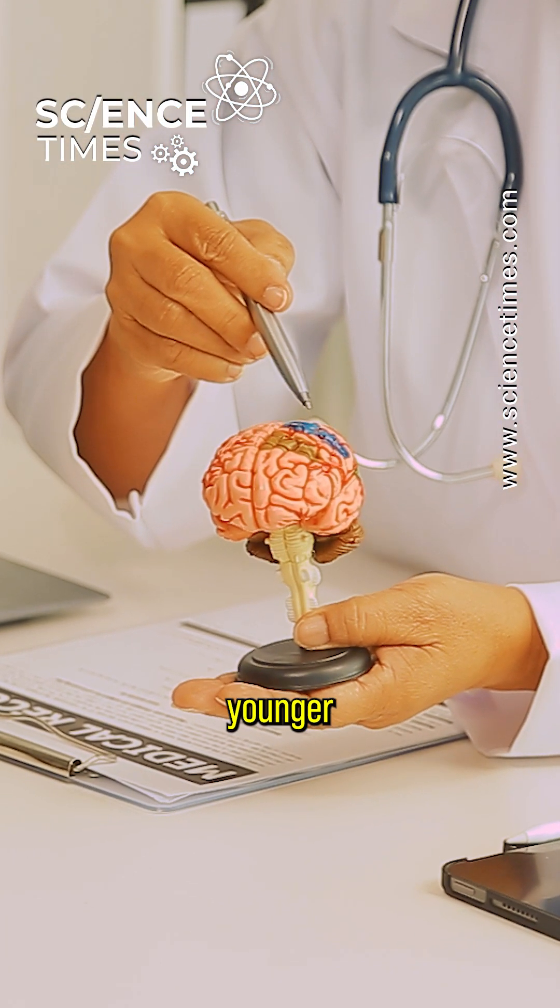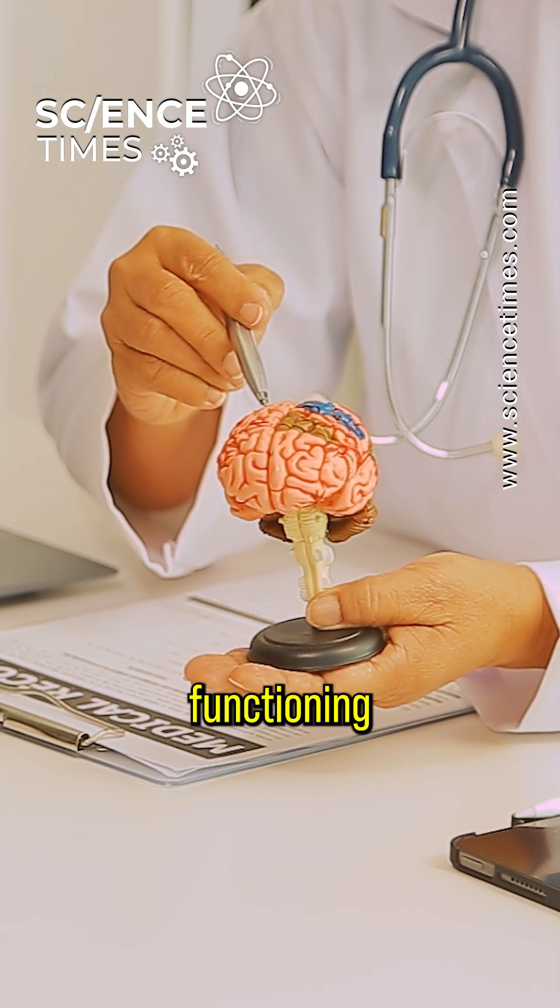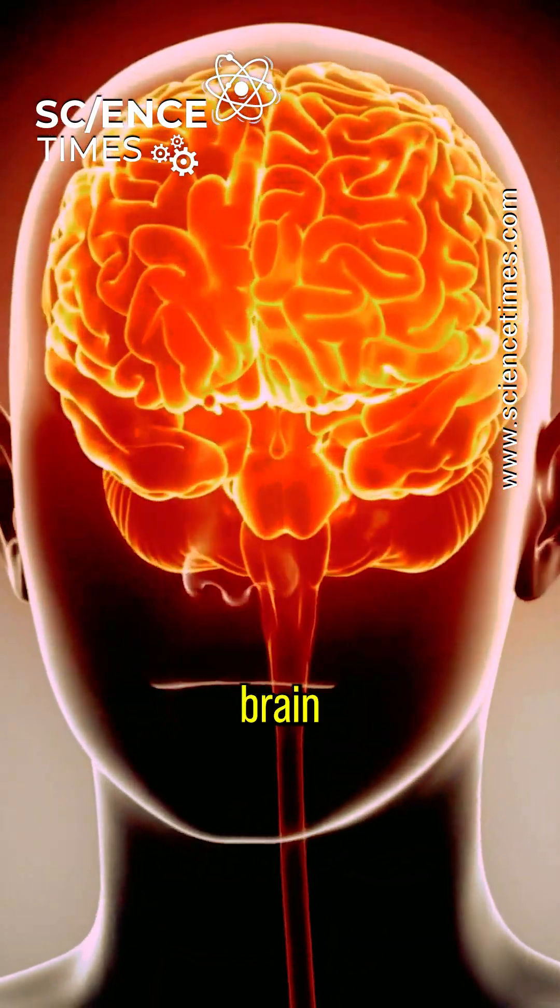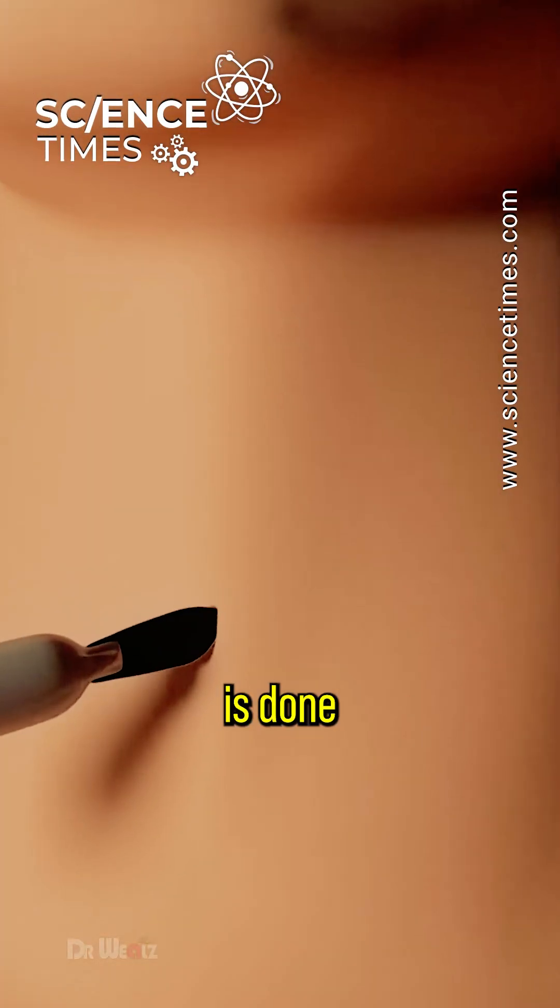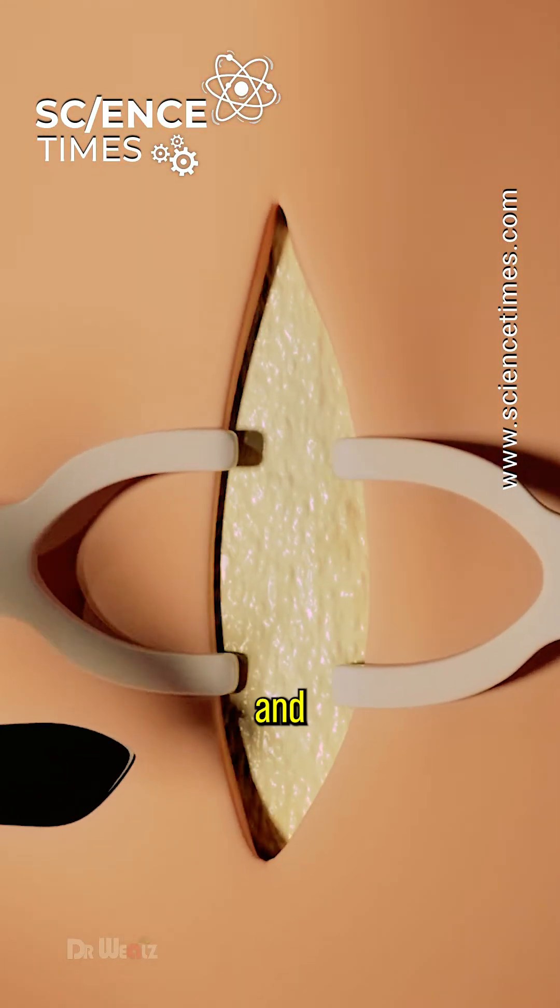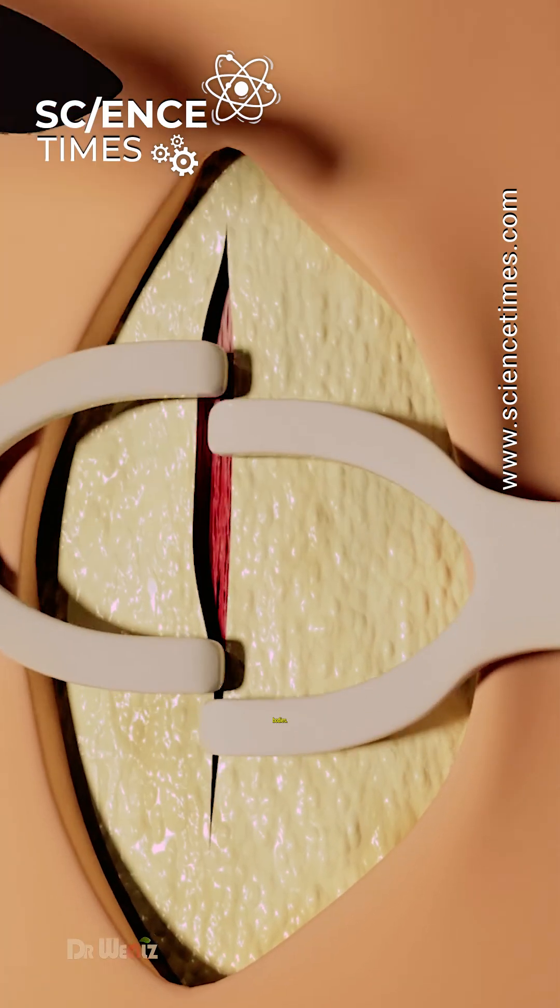The dead brain of the younger donor with vital organs still functioning properly is replaced with the healthy brain of an older deceased recipient. A tracheostomy is done first to provide respiration and mechanical ventilation to both bodies.